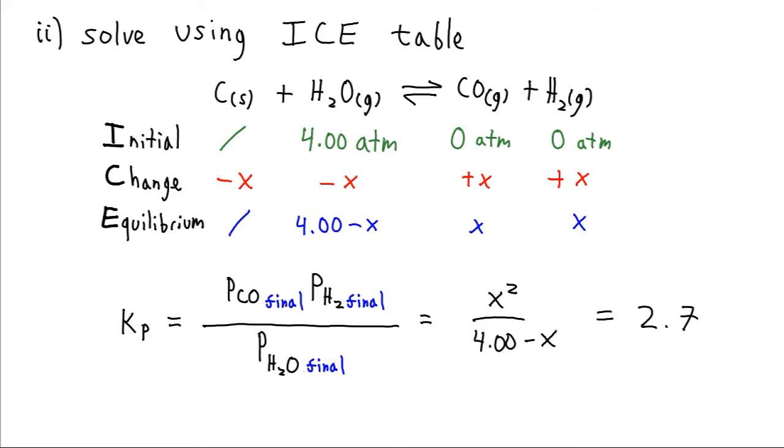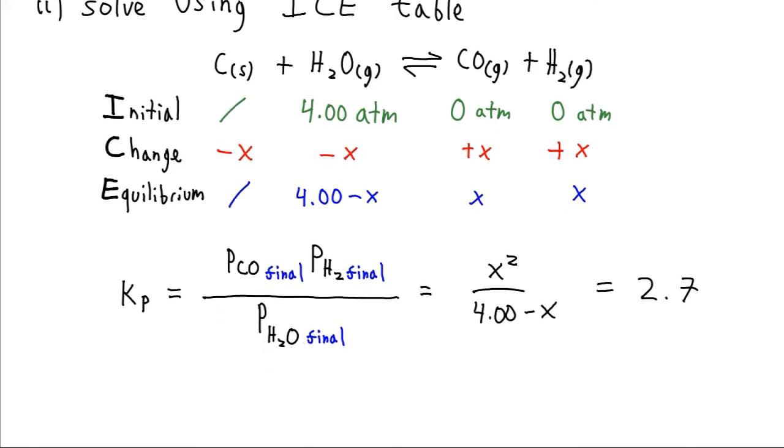So now we'll write down our equilibrium constant expression for pressure, just like we did for concentrations. And it has exactly the same form. These are just pressures now instead of concentrations. And we'll plug in the final equilibrium values, since that's what's represented by our Kp expression. And we figured out that Kp was equal to 2.7. So now we just got to solve for x.